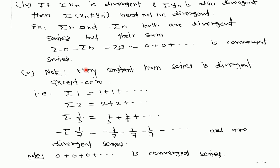Next note: every constant term series is divergent except the zero series. That is, the series 0 + 0 + 0 + … is convergent. All other constant term series are divergent. For example, 1 + 1 + 1 + … is divergent, and 2 + 2 + 2 + … is also divergent. Thank you for watching this video.